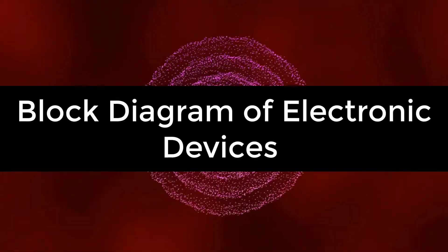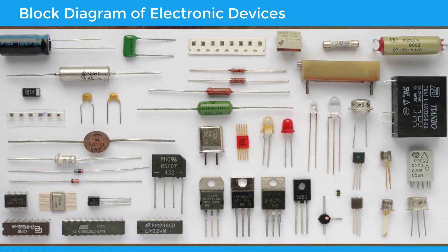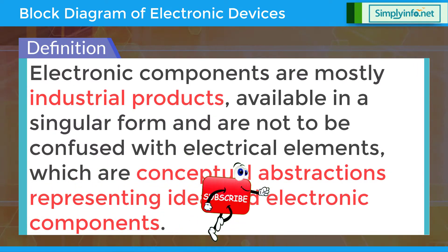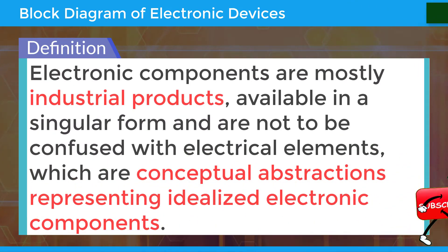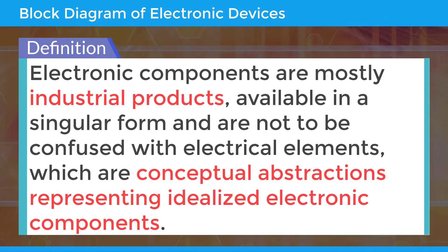Block Diagram of Electronic Devices — Electronic Component Definition. An electronic component is any base discrete device or physical entity in an electronic system used to affect electrons or their associated fields. Electronic components are mostly industrial products available in a singular form and are not to be confused with electrical elements, which are conceptual abstractions representing idealized electronic components.